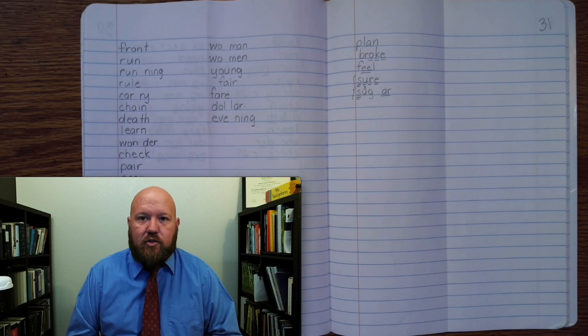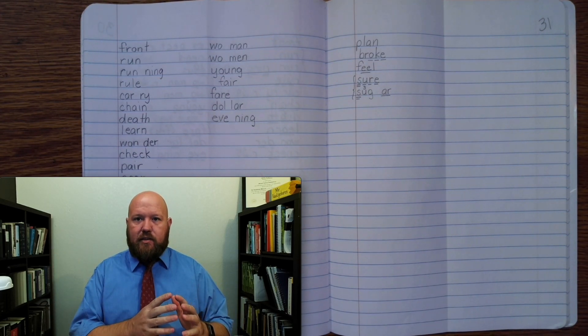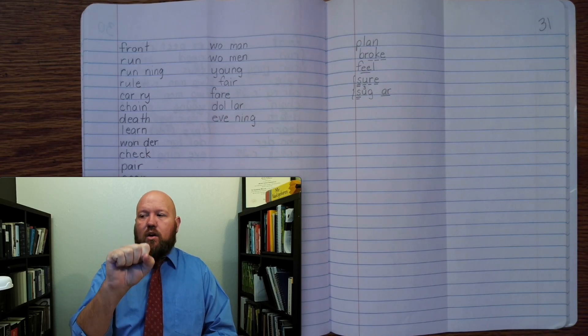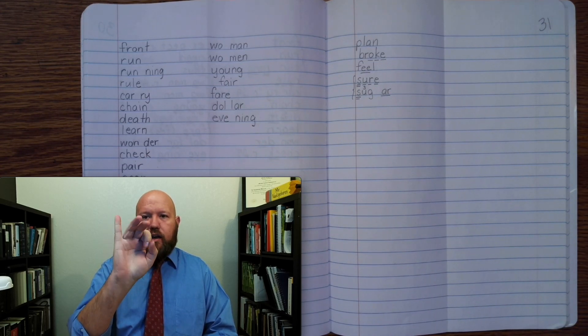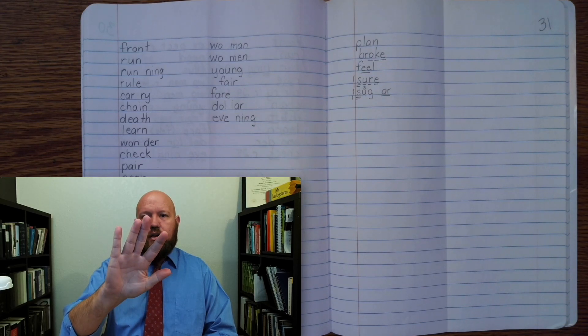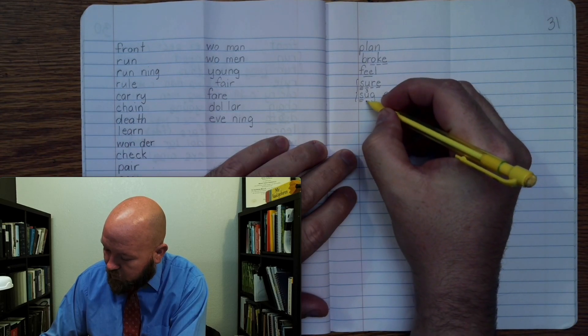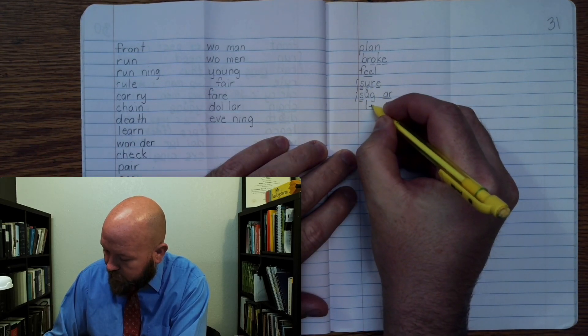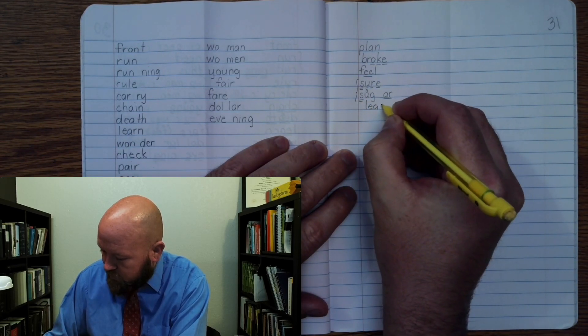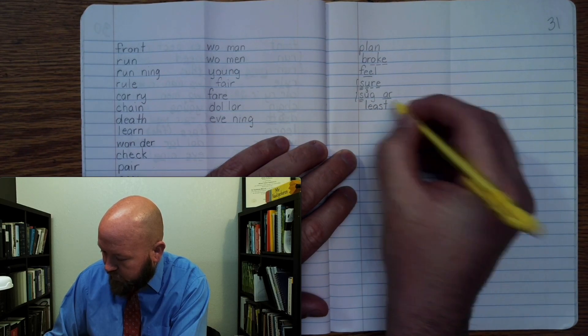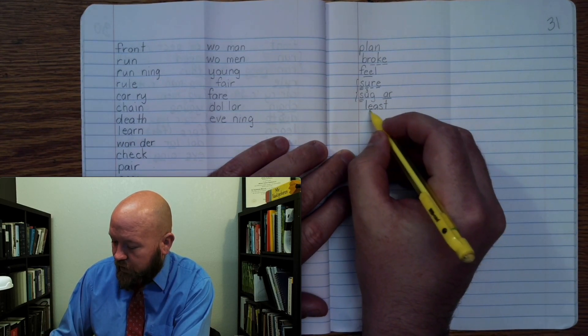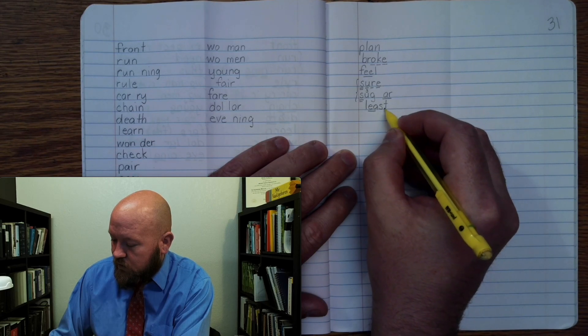The next word is least. So, not the greatest, but the least. Least. Base word, least. L-E-A-S-T. Least. And this is going to be the E-A. Okay, right? Least. L-E-A-S-T. Least. Markings. L-E once, S-T. Least.